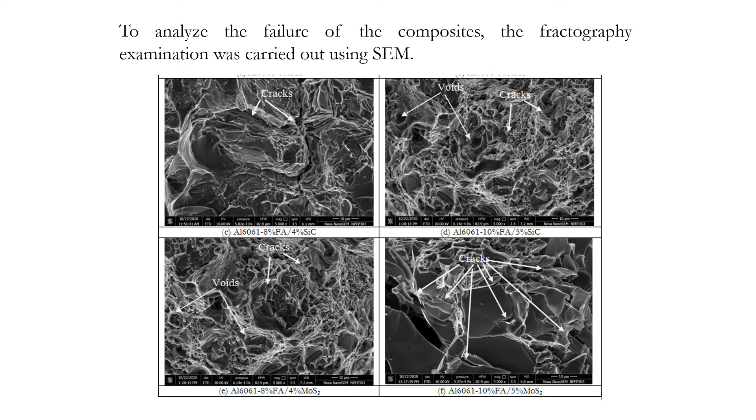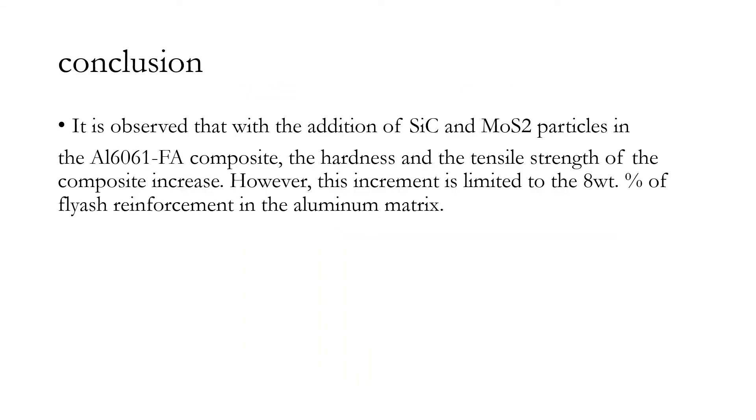To analyze the failure of the composite, fractographic examination was carried out using scanning electron microscope. Finally, it is observed that the addition of silicon carbide and molybdenum disulfide particles in the aluminum 6061 fly ash composite increases the hardness and the tensile strength of the composite. However, this increment is limited to the 8 weight percent of the fly ash reinforcement in aluminum matrix.